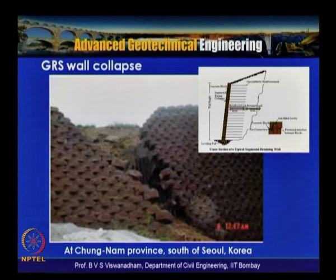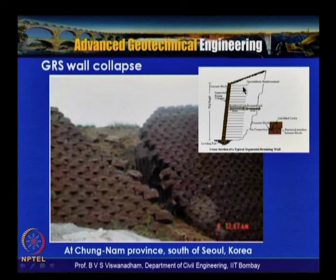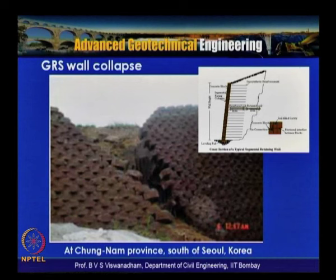A geogrid-reinforced soil wall failure in Seoul, Korea in 2004 illustrates that when high-fines soil is used in the reinforced zone, ingress of water causes positive pore water pressures to increase forces in reinforcement layers beyond design limits, leading to failure. This segmental block wall failure example demonstrates the importance of using highly permeable soil in reinforced zones.